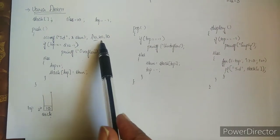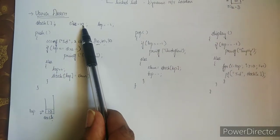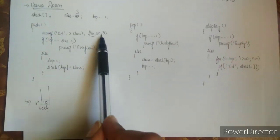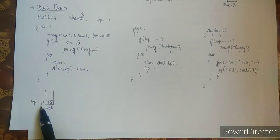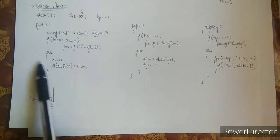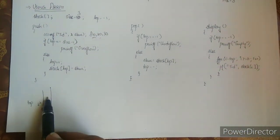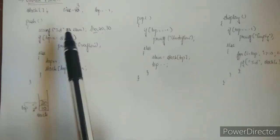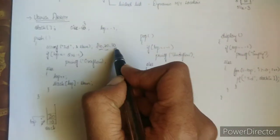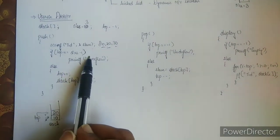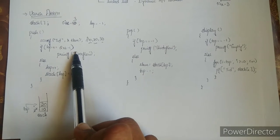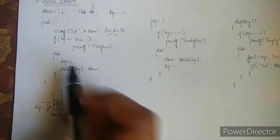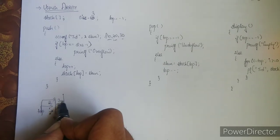Now we insert element 20. Let's take size as 3 instead of 10. If top equals size minus 1: top is currently 0, and size minus 1 is 2, so the condition is false — go to else. Top++ makes top 1, and stack[top] = 20 is inserted. Now inserting 30: top is 1 and size minus 1 is 2, so go to else again. Top++ makes top 2 and stack[top] = 30 is inserted.